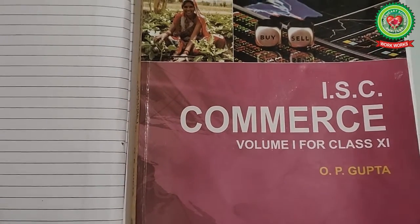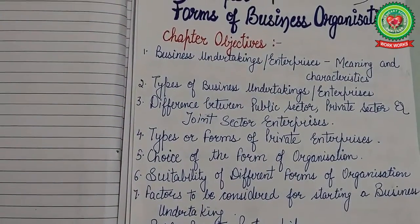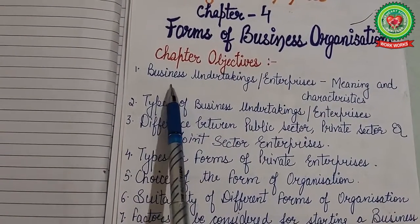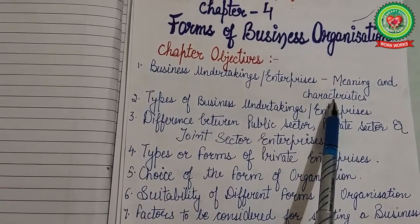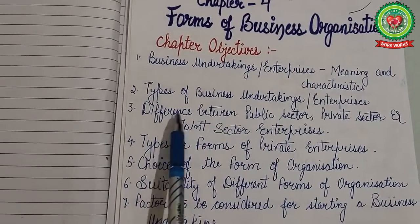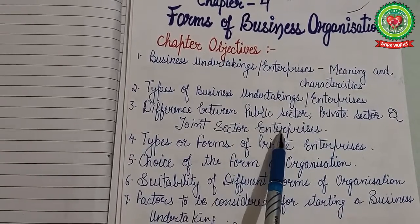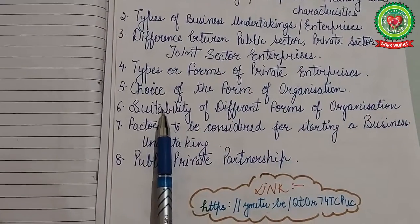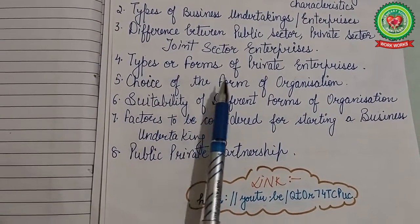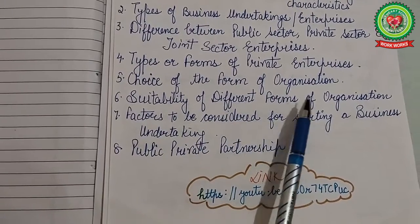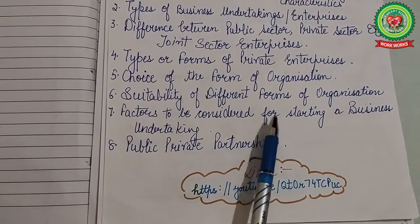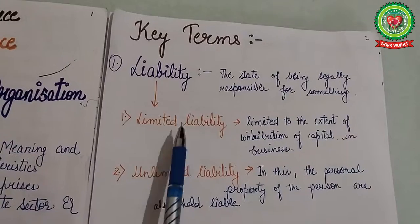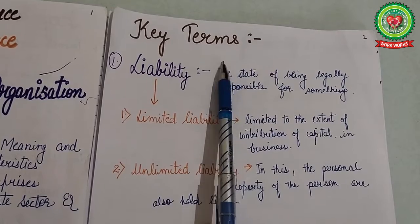Hello students, hope you are well and working hard to achieve your goals. Yesterday we started our chapter on forms of business organization, where we discussed business undertakings, its meaning and characteristics, types of business undertakings, difference between public, private, and joint sector undertakings, and types of forms of private enterprises. Today we will discuss choice of the form of organization, suitability of different forms of organization, factors to be considered for starting a business undertaking, and public-private partnership.